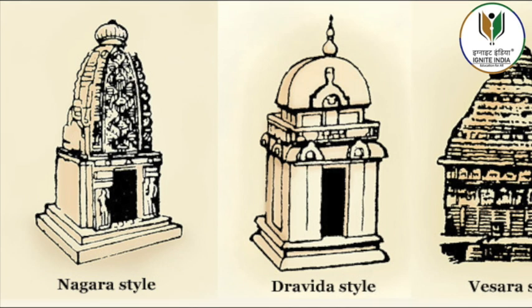Dedicated to Shiva as Nataraja, the Halebidu temple is a double building with a large hall for the mandapa to facilitate music and dance.